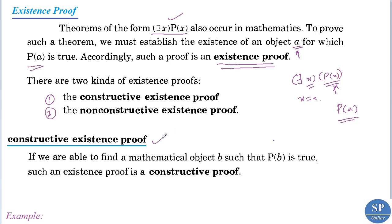What is a constructive existence proof? If you are able to find a mathematical object b such that p of b is true, such an existence proof is a constructive proof. That is, in constructive existence proof we need only to find a b such that p of b is true. Then the theorem — there exists x, p of x — is proved.